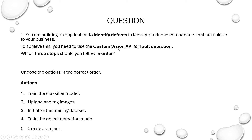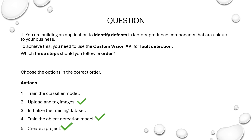Getting back to the question: our need is to identify defects in factory produced components. Our need is not to categorize these components into any group — we need to identify the defects in those components. So we should use the object detection model because we have to detect defects in the component. The steps to follow are: first, create a project; second, upload and tag the images; and third, train the object detection model.